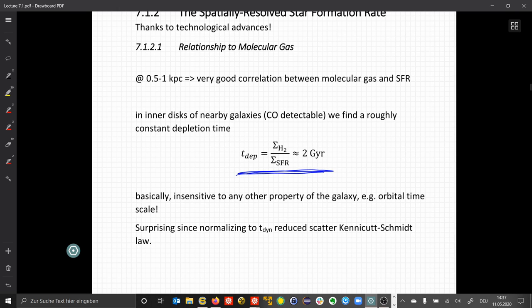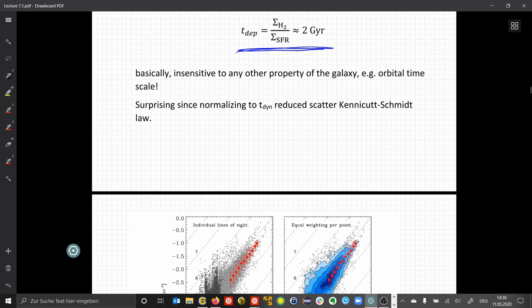That's very comparable to our results for the Milky Way. It's basically constant and insensitive to any other properties that these galaxies might have, for example the orbital time scale. This is somewhat surprising since our normalization to the dynamical time significantly helped to reduce the scatter in the Kennicutt-Schmidt law, as we saw in one of the earlier slides.